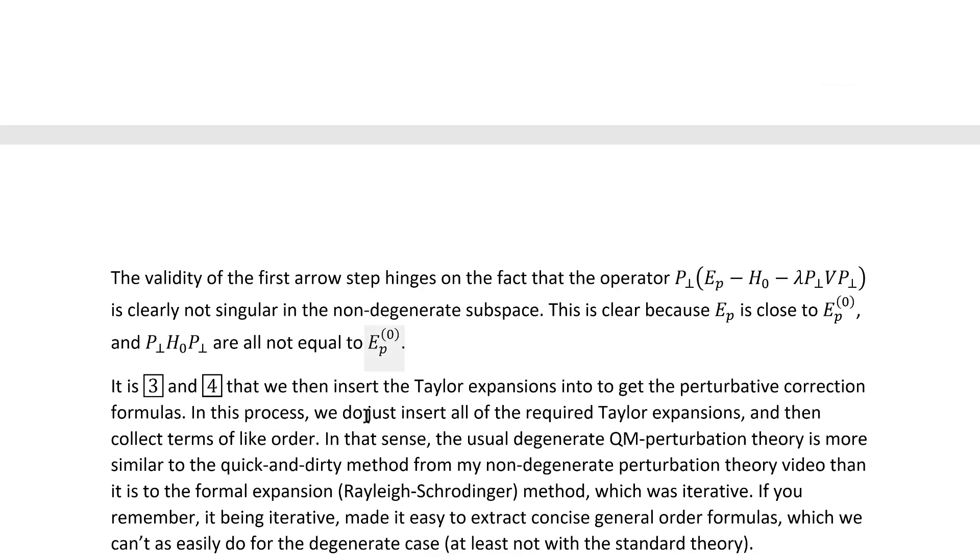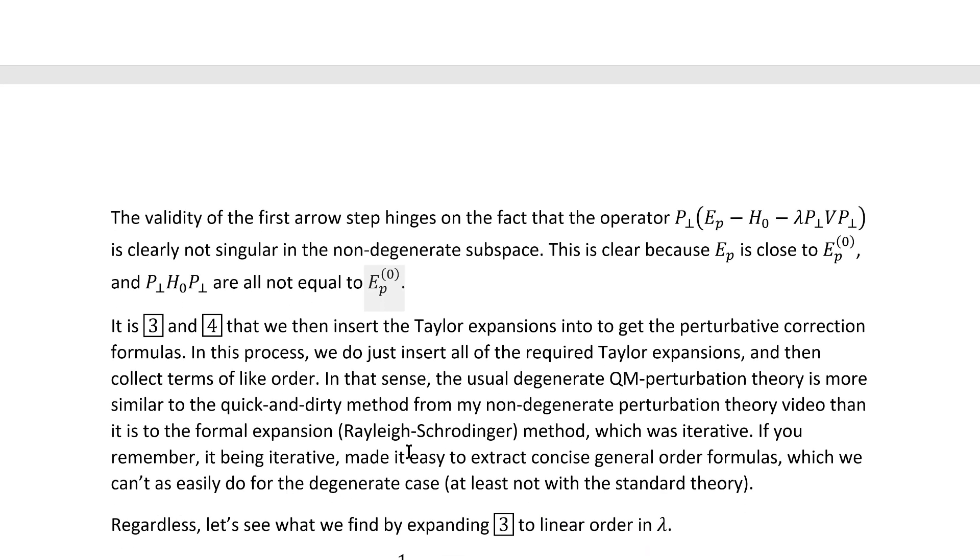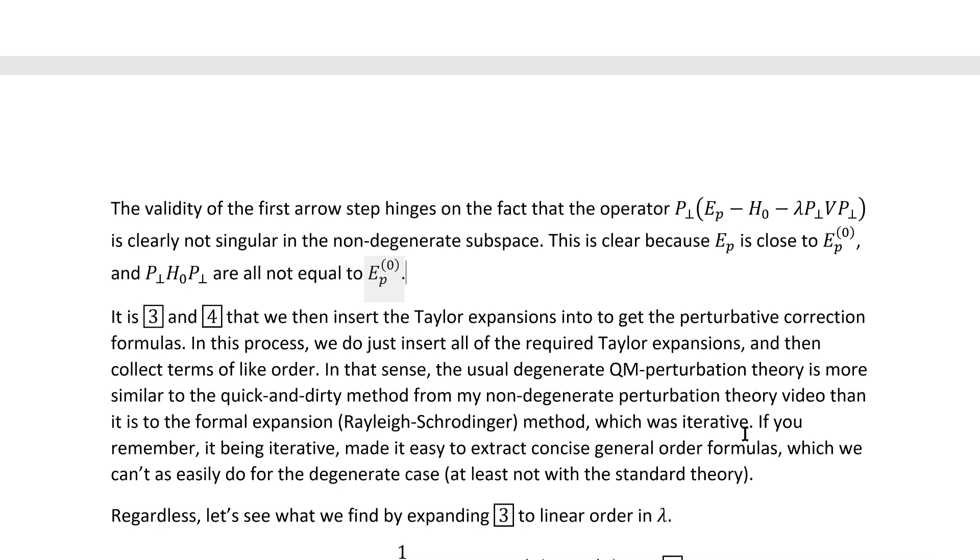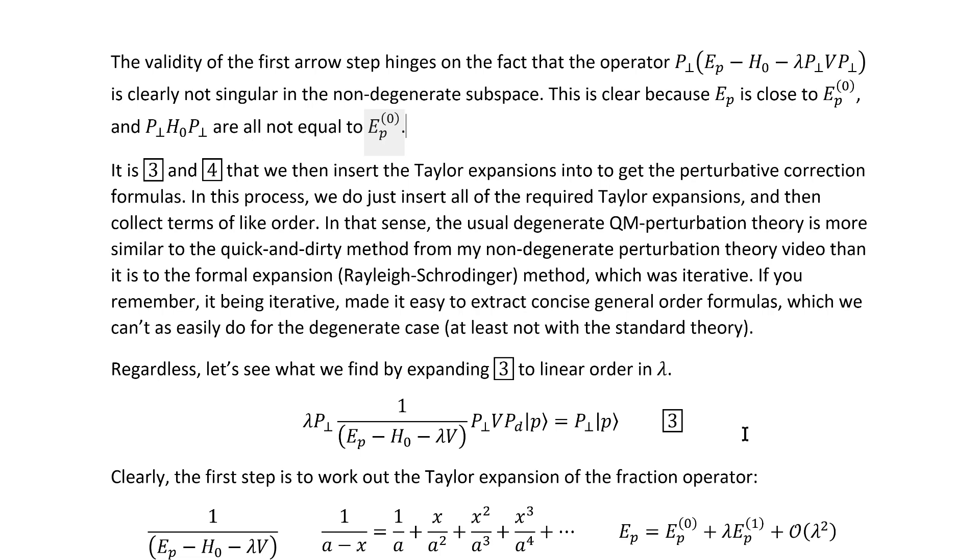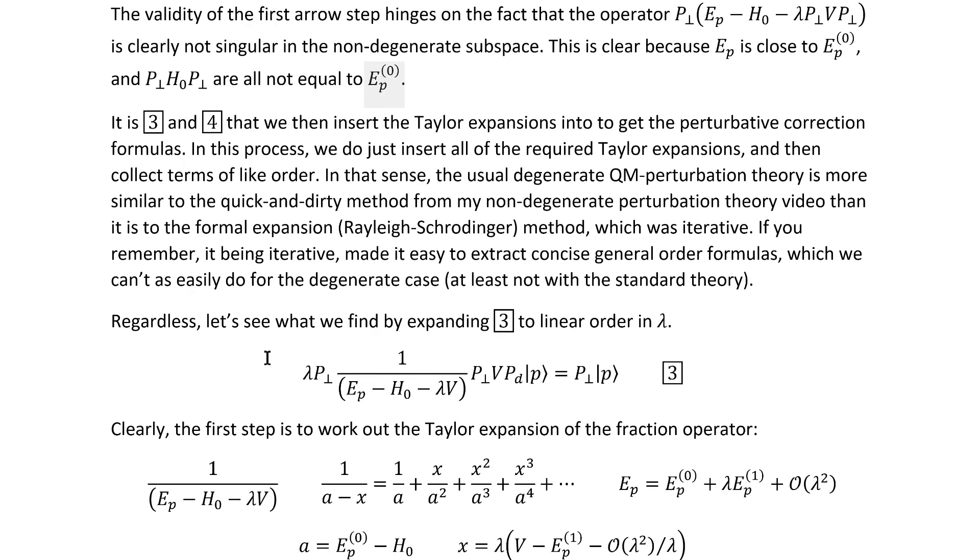It's actually 3 and 4 that we're going to insert the Taylor expansions into to get the perturbative correction formulas. In this process, we do just insert all the required Taylor expansions and then collect terms of like order. In that sense, the usual degenerate quantum mechanical perturbation theory is actually more similar to the quick and dirty method from my non-degenerate perturbation theory video than it is to the formal expansion method, the Rayleigh-Schrödinger method, which was iterative. If you remember, however, the Rayleigh-Schrödinger method being iterative made it easy to extract concise general order formulas from it, which we can't easily do for the degenerate case, at least not with this standard method that I'm presenting you here, which you see in most of the textbooks.